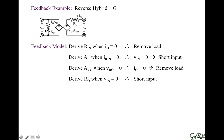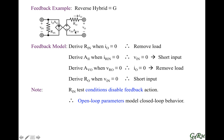When we derive the input resistance, we nullify the effects of the current source at the input, which is driven by the output current — this is a form of feedback, because what's happening at the output is being translated back to the input. Nullifying this current source disables the feedback action, just as deriving the output resistance disables the feed-forward action of the voltage source at the output. Each parameter on its own is an open-loop parameter that, when combined, predicts the loaded response of the closed-loop circuit — both forward translations and feedback translations.